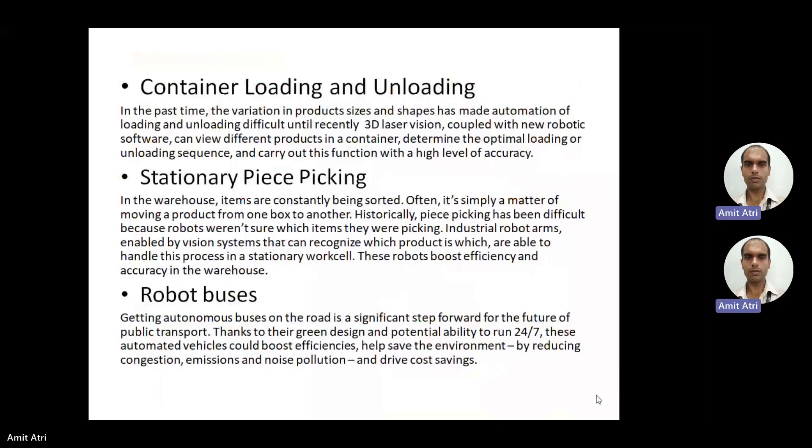In container loading and unloading, the variation in product size and shape was a big obstruction for automated systems. But with recent advancements, 3D laser vision coupled with new robotic software can view different products in a container, determine the optimal loading or unloading sequence, and carry out this function with a high level of accuracy.